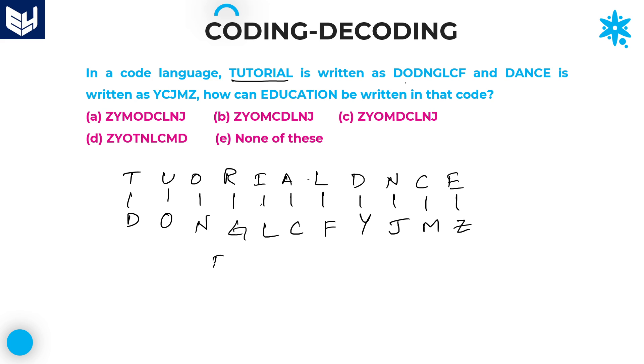Now, it is very easy to write down the code for the given word, which is EDUCATION. E-D-U-C-A-T-I-O-N. E stands for Z. D is equal to Y. All are capital letters. Don't write small letters. U is equal to O. C is equal to M. A is equal to C. T is equal to D. I is equal to L. O is equal to N. N is equal to J.